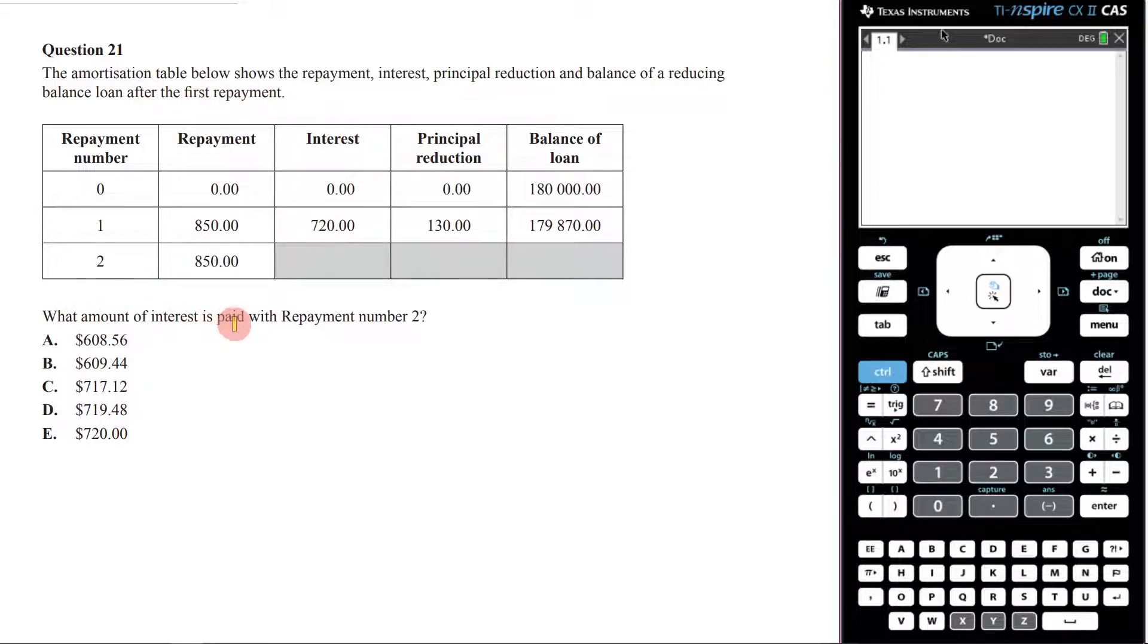What amount of interest is paid with repayment number two? So what we're trying to figure out for repayment number two, what is the amount of interest that is being paid? So we're trying to figure out this cell right here.